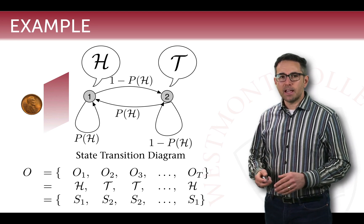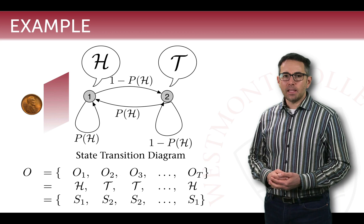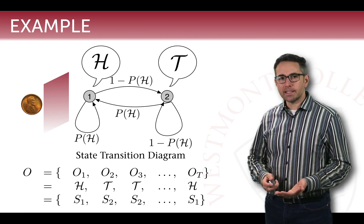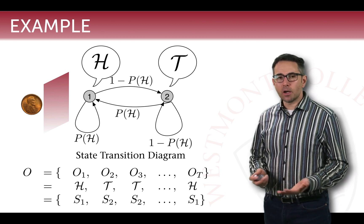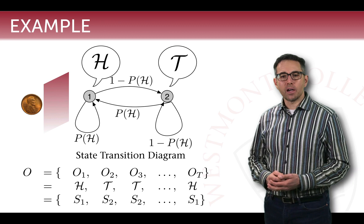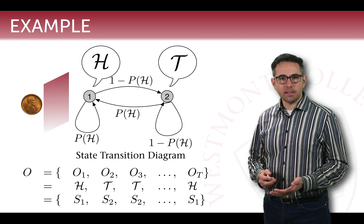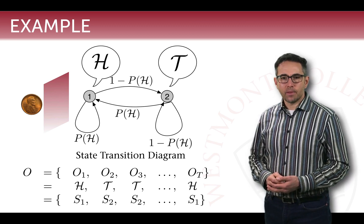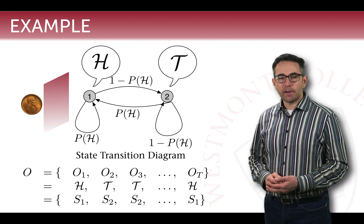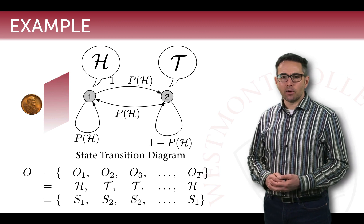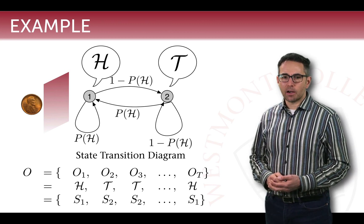If it's a fair coin, the probability of heads is 50% and the probability of tails is also 50%, giving equal probability of seeing heads or tails on any single observation. This might generate a sequence O1 to OT like H, T, T, H — indicating we're in state one, then state two, then state two again, and finally back in state one. This is a pretty straightforward state model, very similar to a hidden Markov model — in fact, you can call this a hidden Markov model because what we observe, heads or tails, is exactly what's happening on the other side of the curtain.